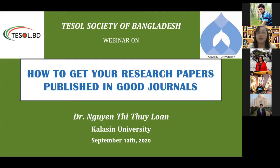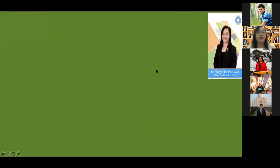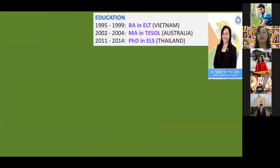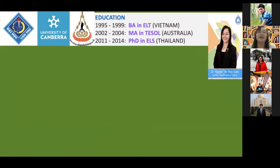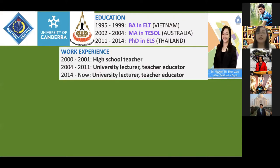It will be easier to follow me if you know a little about my educational and research background. I am currently a lecturer at Kalasin University, a small university in the northeastern part of Thailand, and I received my three degrees from three different countries. Although I did my master's program at an Australian university, I had no publication from it because it was coursework-based. The gap between my master's and PhD studies was almost 10 years, during which I worked as a university lecturer and teacher educator in Vietnam, where publication was not required.